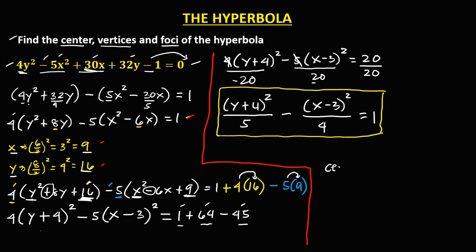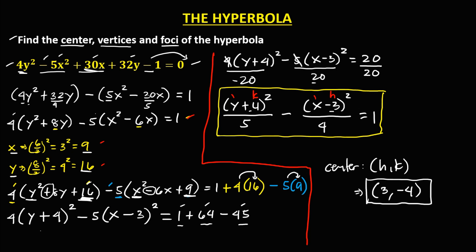To find the center: in the hyperbola, the center is (h, k). From the standard equation, the x term gives h and the y term gives k. Since the equation has (x minus 3), h is positive 3. Since the equation has (y plus 4), k is negative 4. So the coordinate of the center is (3, negative 4).